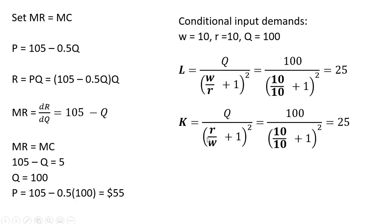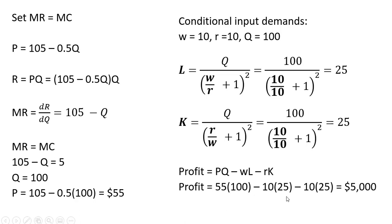The firm will also use 25 units of capital. In terms of profit, profit is revenue minus total cost. Revenue is 55 times 100. The cost of labor is the wage times the quantity of labor used, and the cost of capital is the price of capital times the quantity of capital used. So we get a profit of $5,000.